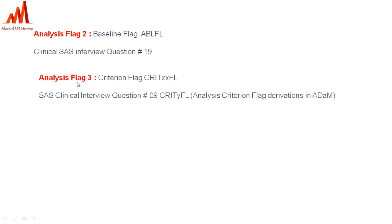Analysis Flag 3 is the Criterion Flag. This flag is explained in detail in interview question number 9, covering why criterion flags are created, how they are used, and what their purpose is in ADaM.